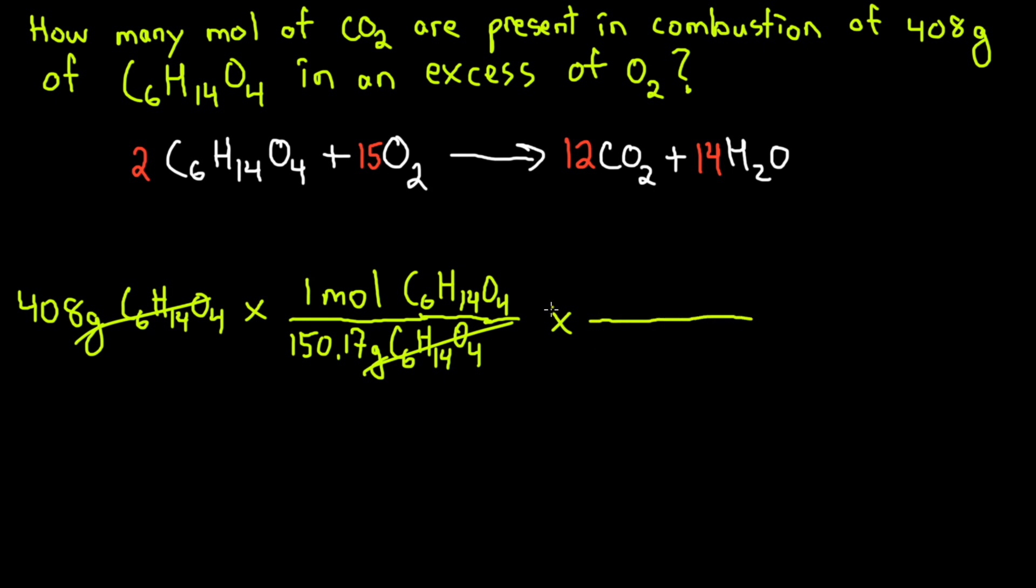We start with 408 grams of C6H14O4 and convert to moles using molecular mass. Grams cancel with grams, we're left with moles of C6H14O4. Now we transfer from moles of carbohydrate to moles of carbon dioxide using the coefficients. We multiply by two moles of C6H14O4 by 12 moles of carbon dioxide. This comes from the ratios given by the coefficients from balancing the equation. For every two moles of carbohydrate burned, we produce 12 moles of carbon dioxide. The answer is 16.3 moles of CO2.